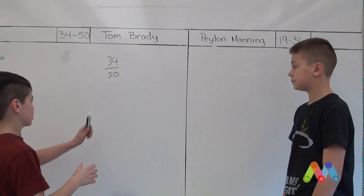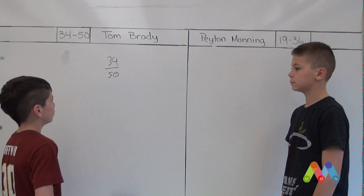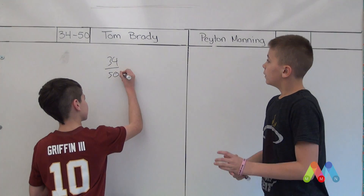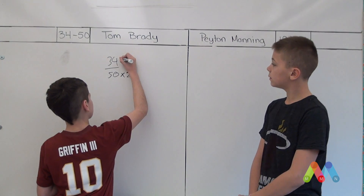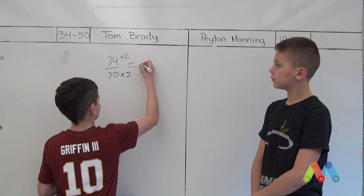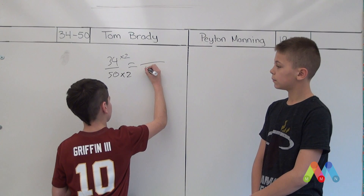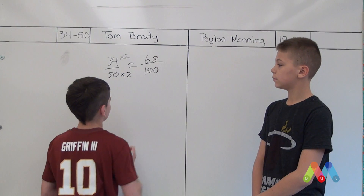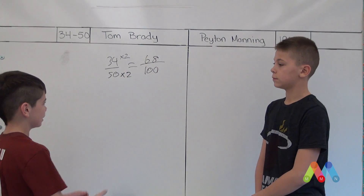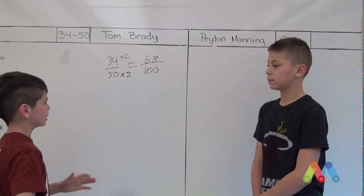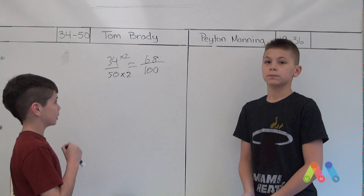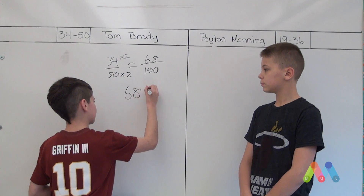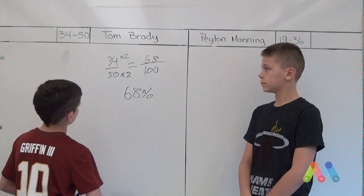We have to try to make this into 100 because 100 can make a percent easier. So I would times it by 2, and same with the numerator. This would be 100 and this would be 68. Now it's 100, so it's easier to make a percent. That's 68 percent for his completions out of 50.